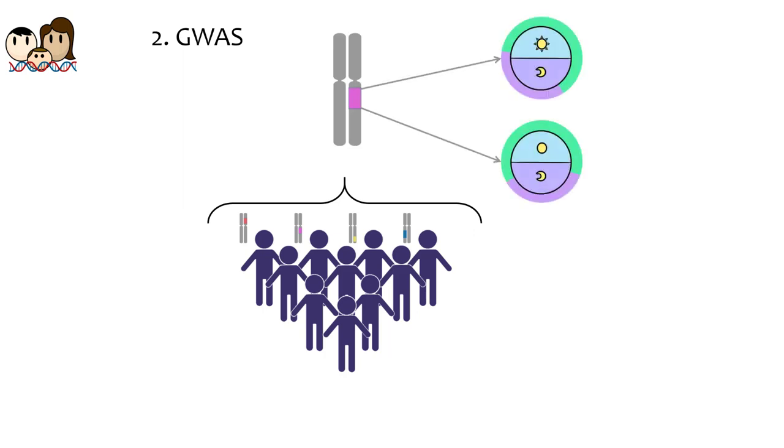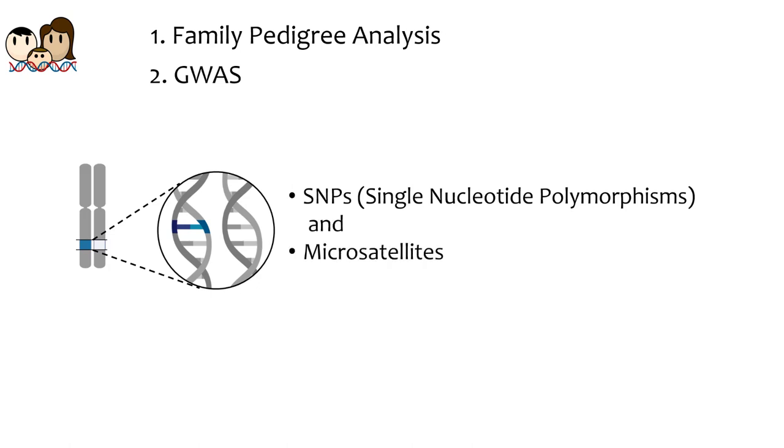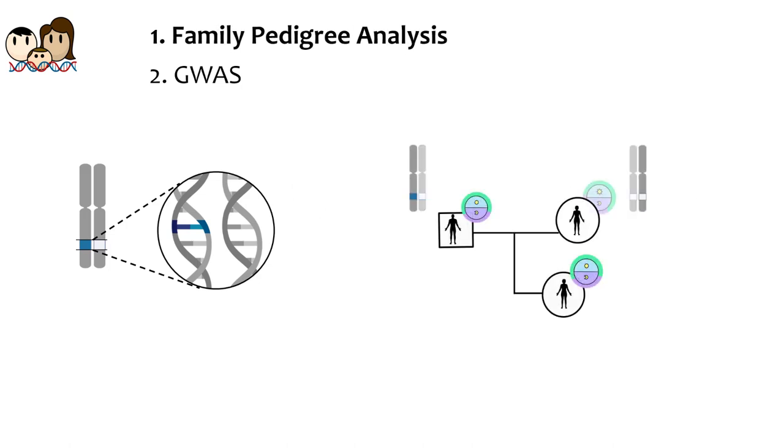Both strategies rely on characterizing sequence variations or polymorphisms that serve as markers in the genome. These include single nucleotide polymorphisms, shortened to SNPs and pronounced snips, or repetitive sequences of DNA called microsatellites, to narrow down the regions of interest. The segments of each chromosome that we have inherited from our ancestors contain characteristic patterns of these markers. These sets of closely linked markers are known as haplotypes.